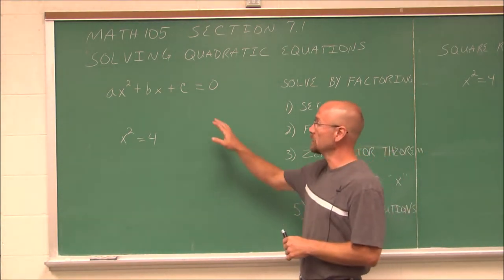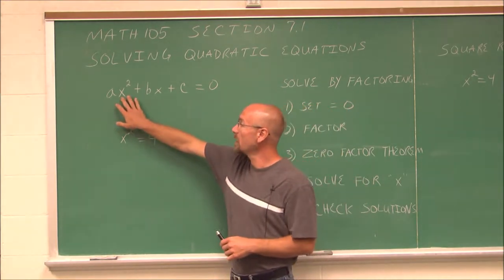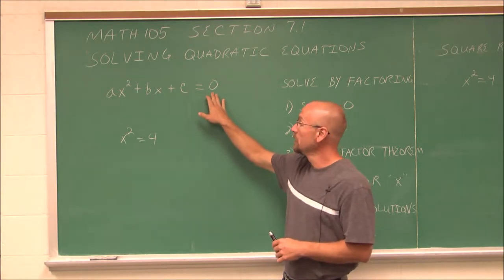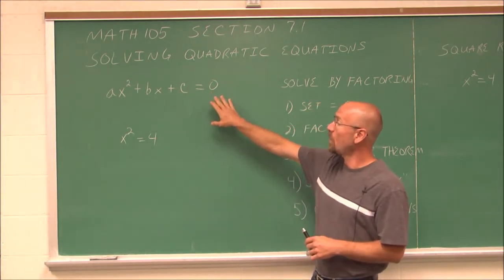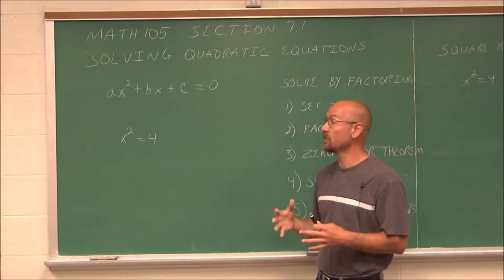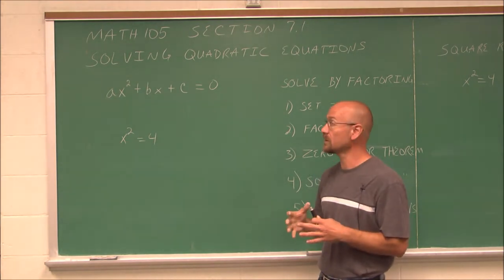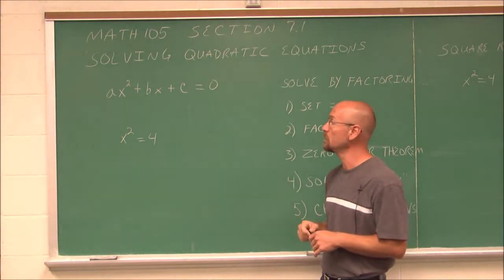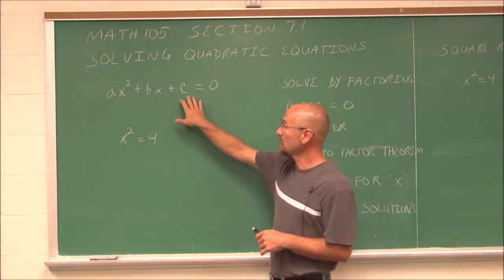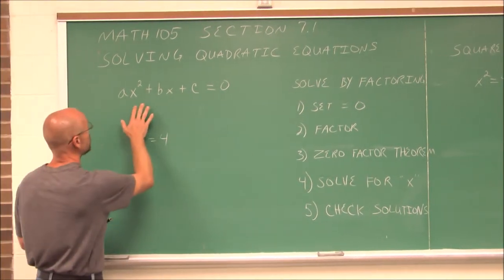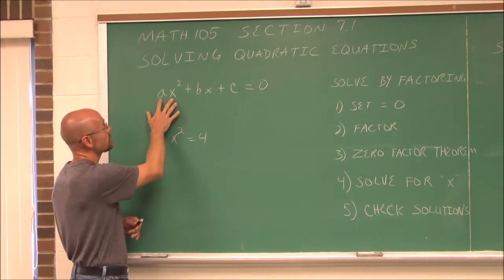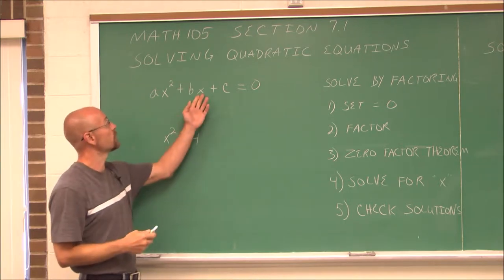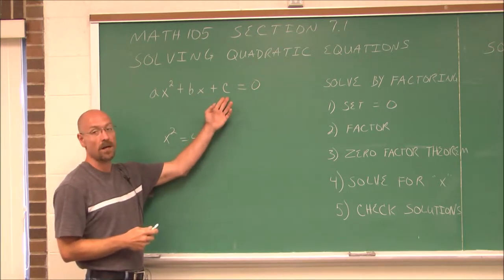Quadratic equations in standard form are ax squared plus bx plus c, and we set them equal to 0. When it comes to quadratics, hopefully we're very familiar with factoring, because that's going to be our first tool to solve a quadratic equation. We should be able to identify a as the coefficient of the x squared term, b as the coefficient of the x to the first power term, and c as a constant.